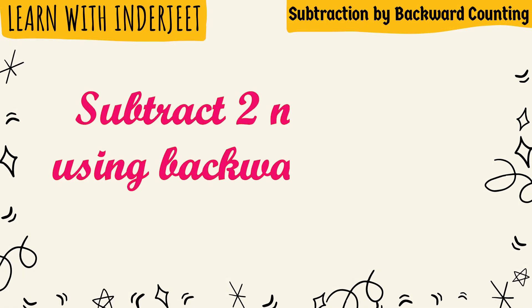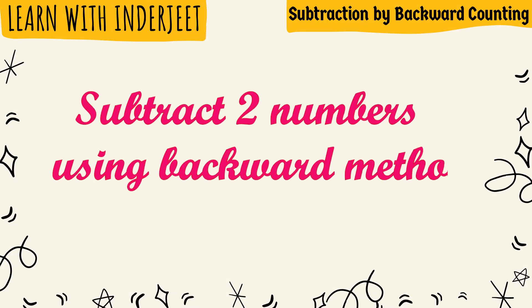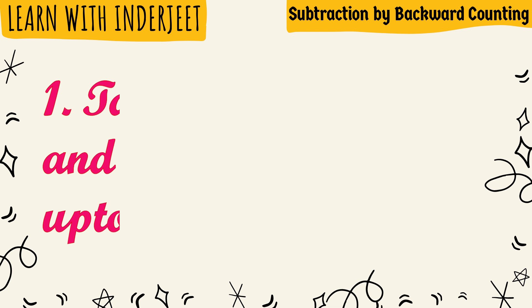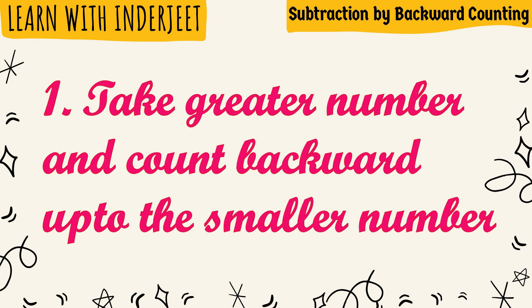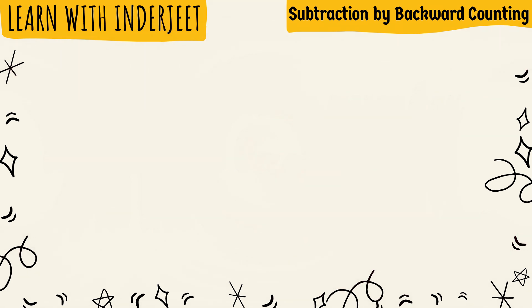To subtract two numbers by the counting backward method, take the greater number and count backward up to the steps equal to the number to be subtracted.